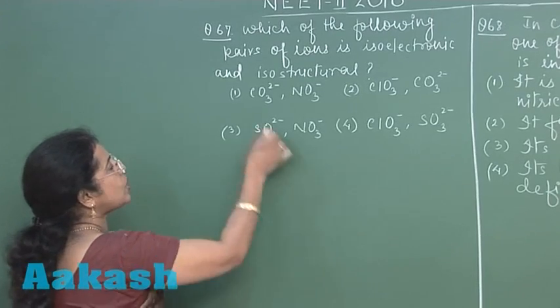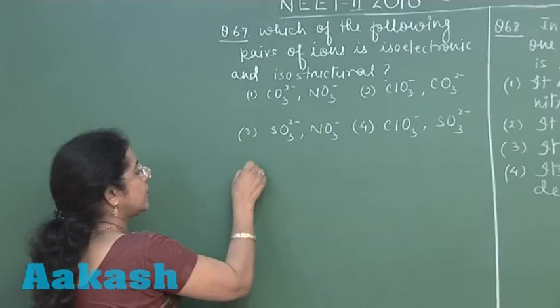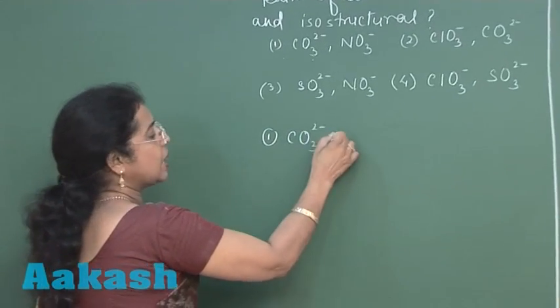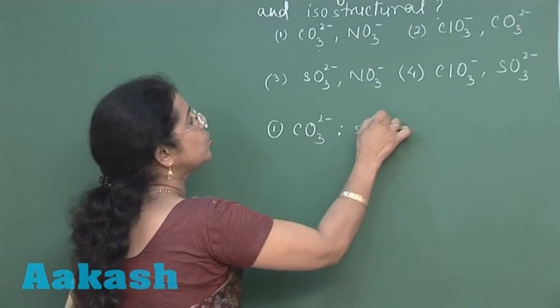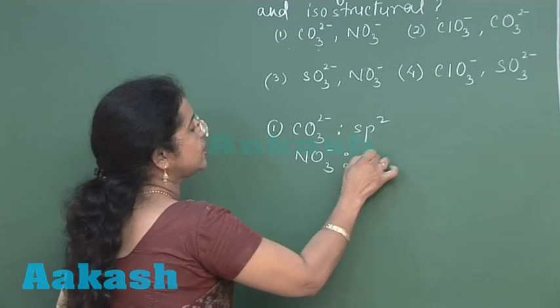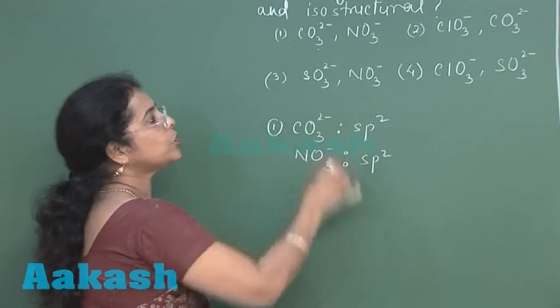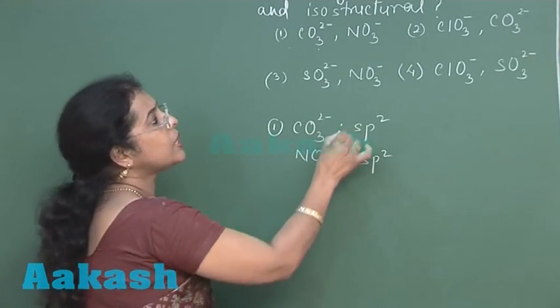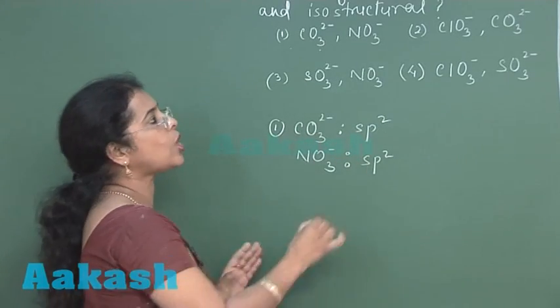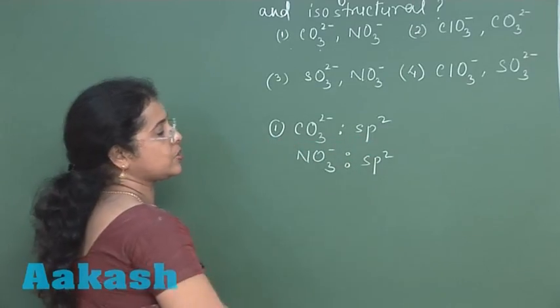Now, let us apply this concept to the first option. Here the carbonate ion hybrid state sp2, nitrate ion hybrid state sp2, so both the ions are isostructural. If we count the total number of electrons that is coming same in both the ions.